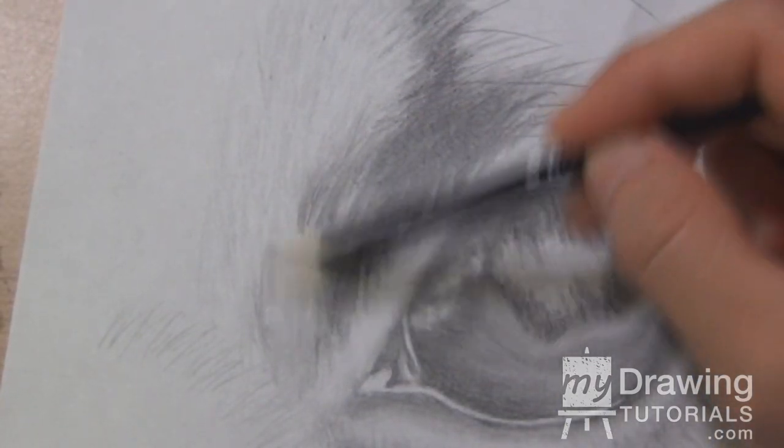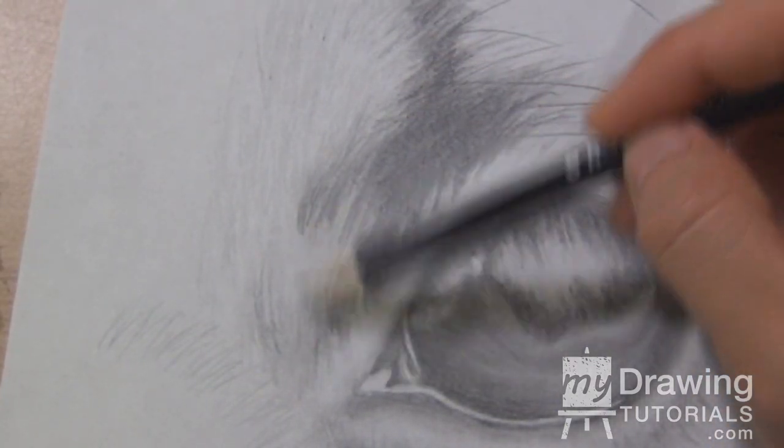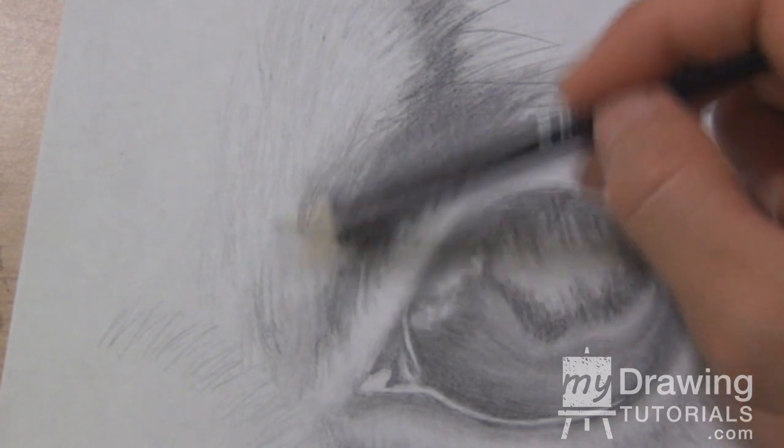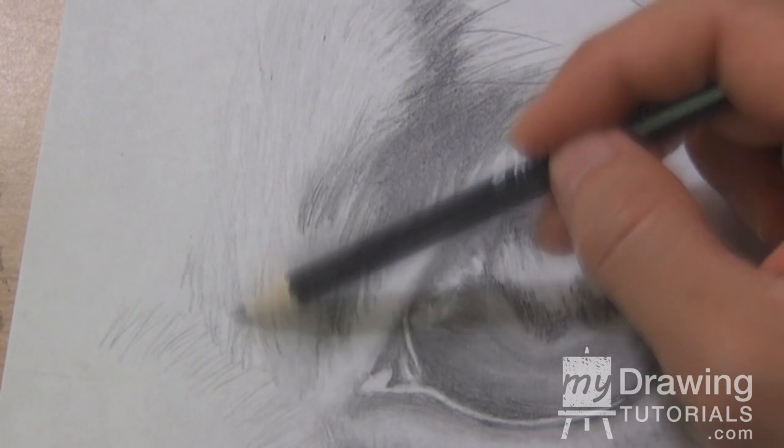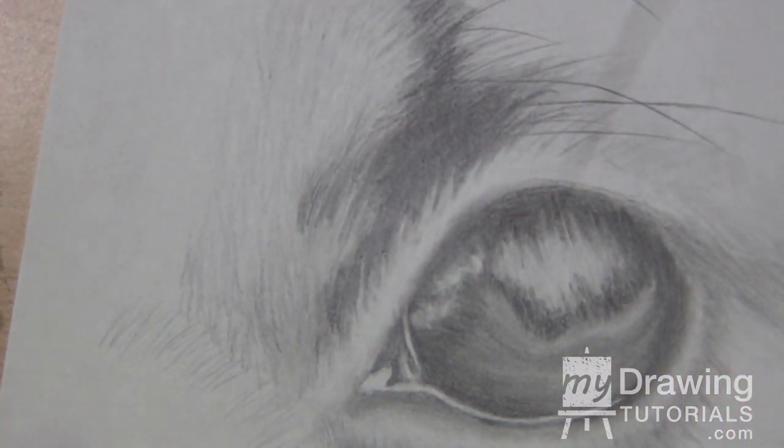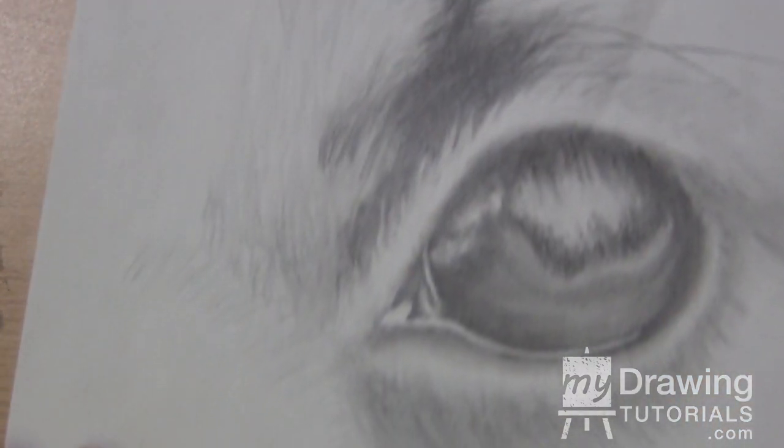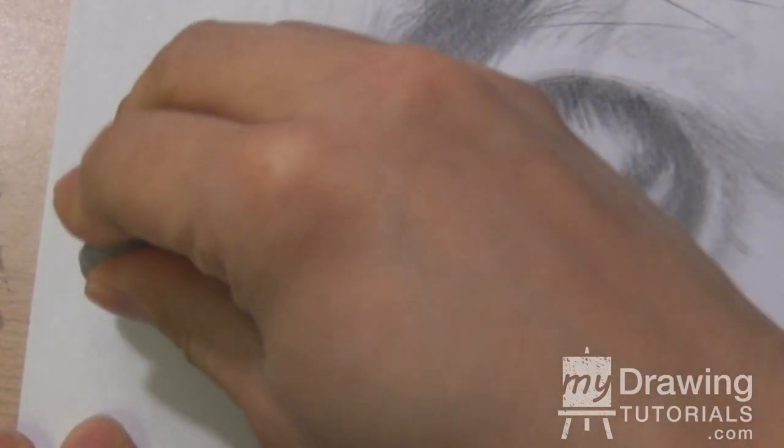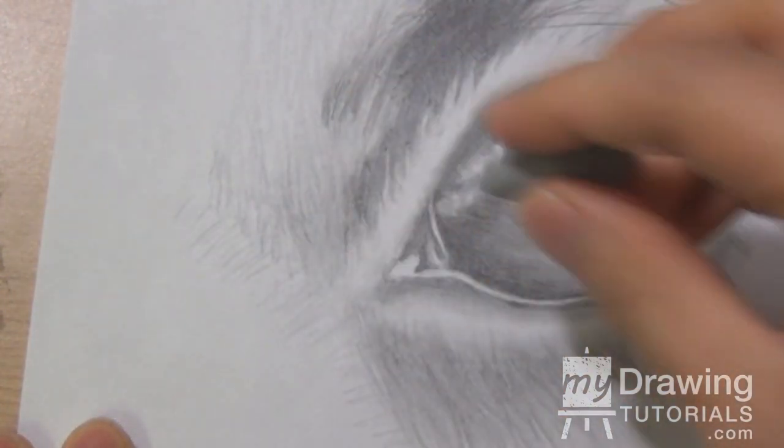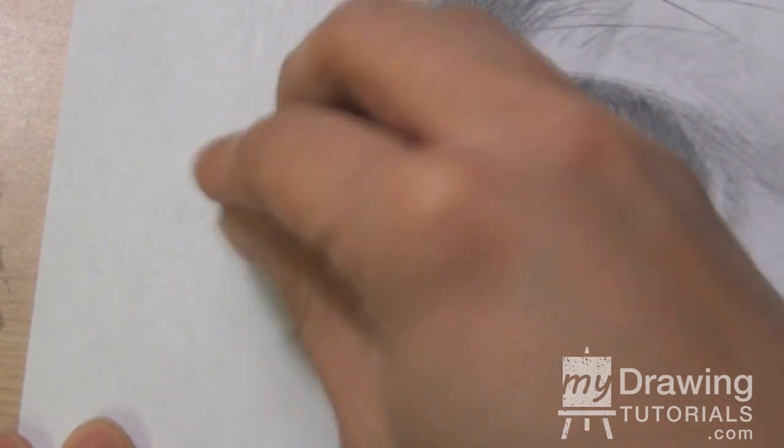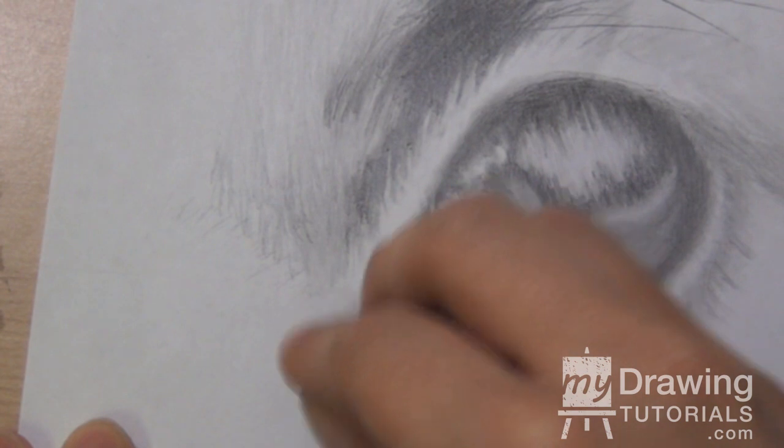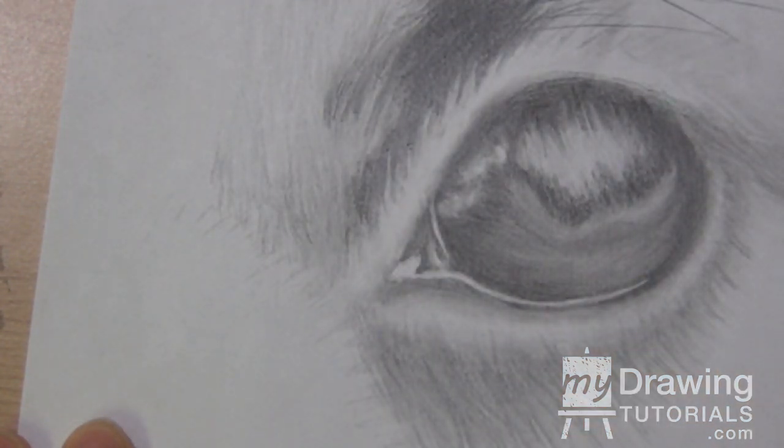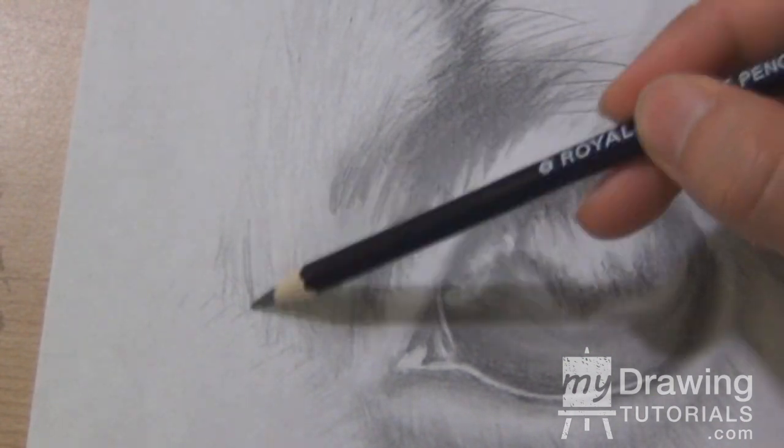And this area down here is a little bit darker in the reference so I'm going to make that a little bit darker as well. And before we go any further I'm just going to go ahead and erase this guideline here that we put in for the fur just so it doesn't interfere with what we're drawing right now. We pretty much know where to put the fur at this point so we don't need those guidelines anymore. Back to the shading.